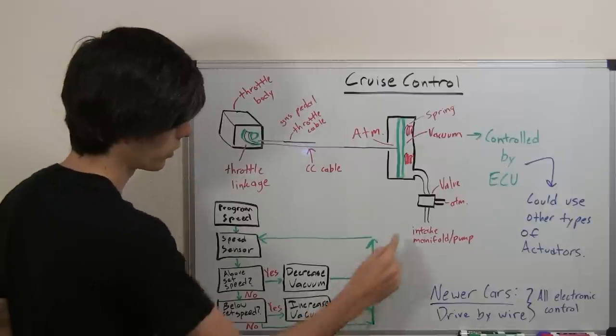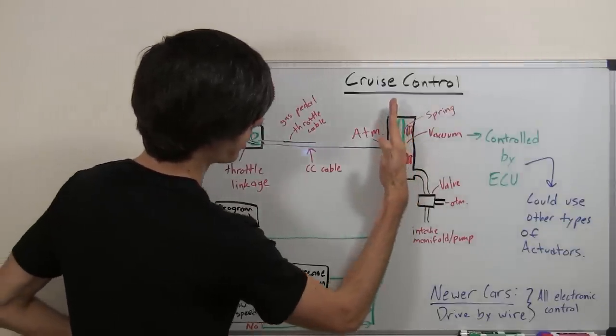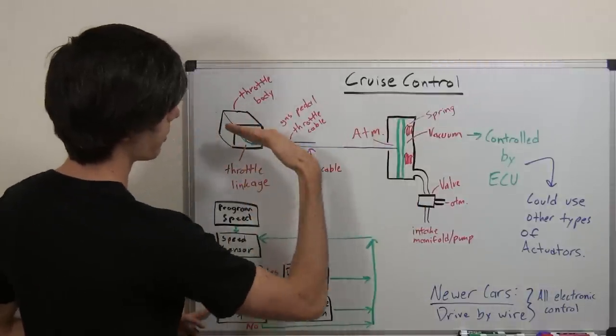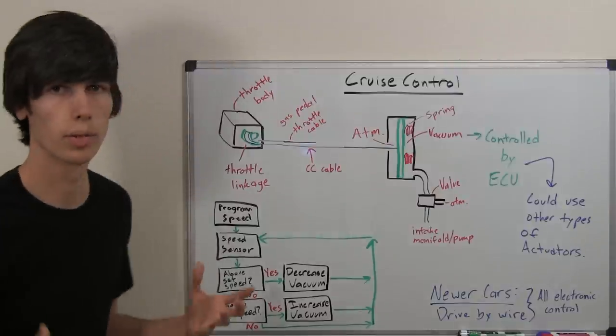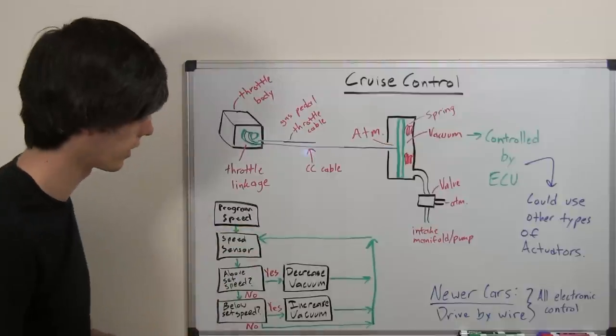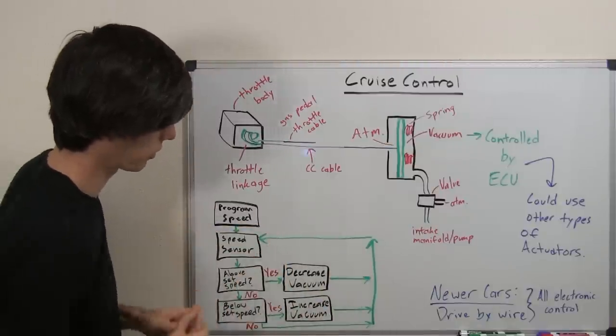So what the ECU will do is manipulate this valve and increase the vacuum in here. By increasing the vacuum, it's going to pull the cable to the right and by pulling the cable to the right, it's going to open up that butterfly valve more. So when the butterfly valve is open more, you'll have more air going in, more fuel will go in, and the car will accelerate. And then it will check itself again to make sure it's set to that programmed speed.